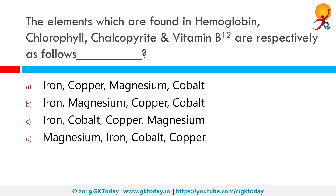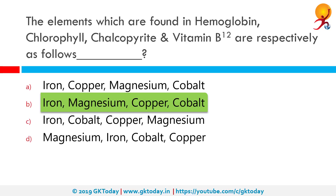The elements which are found in hemoglobin, chlorophyll, chalcopyrite and vitamin B12 are which of the following respectively? Hemoglobin has iron, chlorophyll has magnesium, chalcopyrite has copper and vitamin B12 has cobalt. Iron is an essential element for blood production and about 70% of our body's iron is found in hemoglobin and myoglobin. Magnesium in plants is located in the heart of the chlorophyll molecule. Vitamin B12 is a collective term for a group of cobalt-containing compounds known as corinoids.